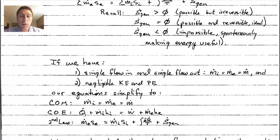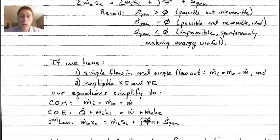With both simplifications applied, conservation of mass gives m-dot-i equals m-dot-e equals m-dot. Conservation of energy simplifies to: heat transfer rate plus m-dot times h-i equals work transfer rate plus m-dot times h-e. The second law equation simplifies similarly, with the summation terms on the m-dot-s terms dropped, giving: mass flow rate times exit entropy equals mass flow rate times inlet entropy plus heat transfer entropy plus entropy generation.